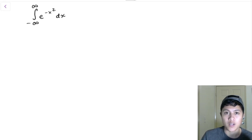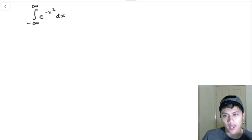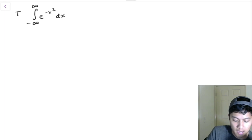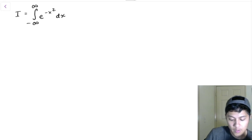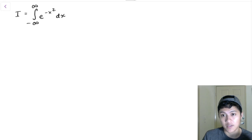In fact, we're going to have to use a special trick, and I'm going to show you that trick right now. So the trick is: let's look at this integral and give it a variable name — let's call it i. So i is equal to the integral from negative infinity to positive infinity of e to the negative x squared dx.